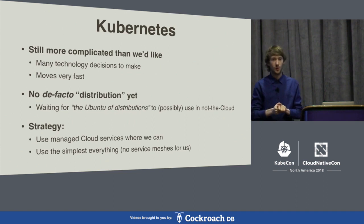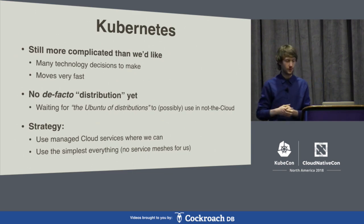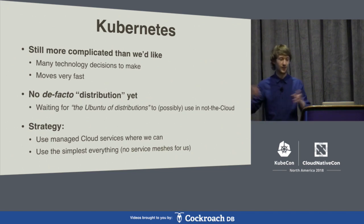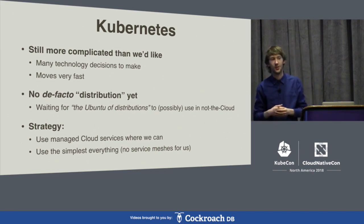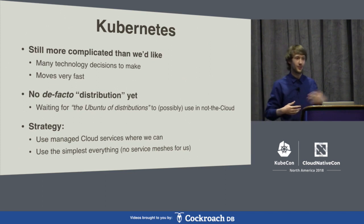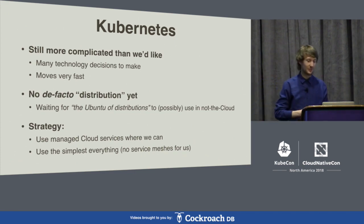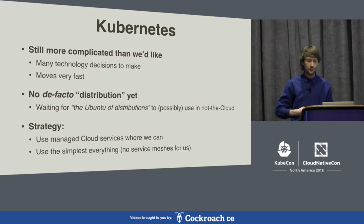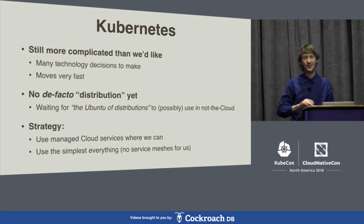Kubernetes is still more complicated than we'd like, and it still moves very fast. We would like for there to be some kind of de facto distribution — kind of like an Ubuntu of Kubernetes. At the moment there are hundreds of products, and we can't really pick one and say this is what we're going to use for all our health platforms that everybody who inherits them will have to use. But if there were something more standard, that might be possible. Our strategy is really: when we can use the cloud, just use a managed service and keep it very simple — and probably no service meshes for a little while.